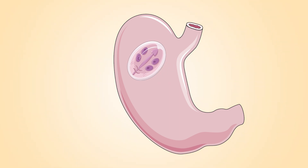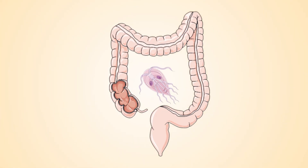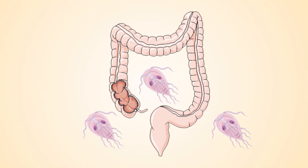Normally we ingest inactive Giardia through contaminated food or water and it becomes active in our stomach. Then it reaches the gut and here it starts to reproduce very quickly. Giardia can survive here for weeks — and we have just found another body that gives us some company.